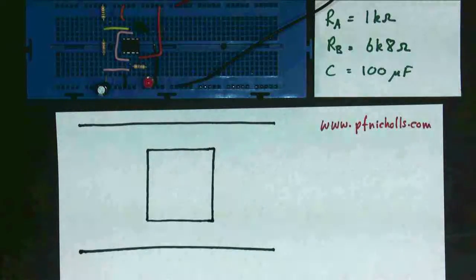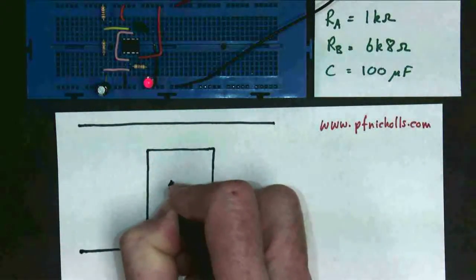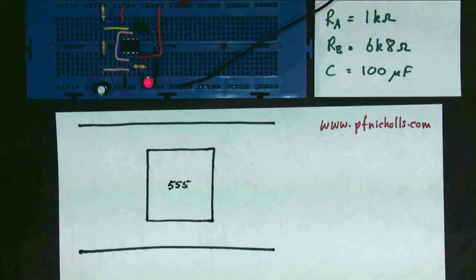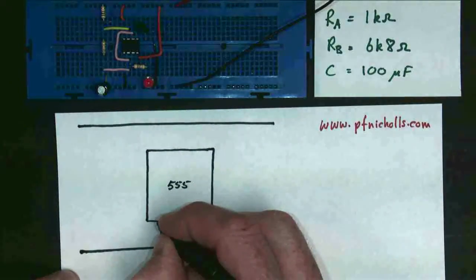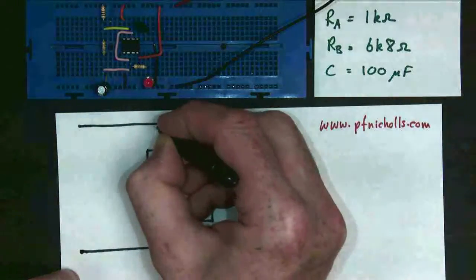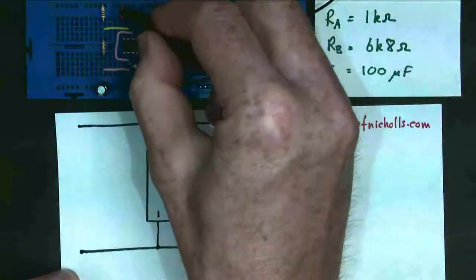This is based upon the 555 chip. So I'm going to start off by drawing the circuit, because I think that's an important skill. So there's my 555 chip, and all students should know how to draw this. We have our power connectors down to 0 volts, which is pin 1, and up to positive, which is pin 8, just here and just here.